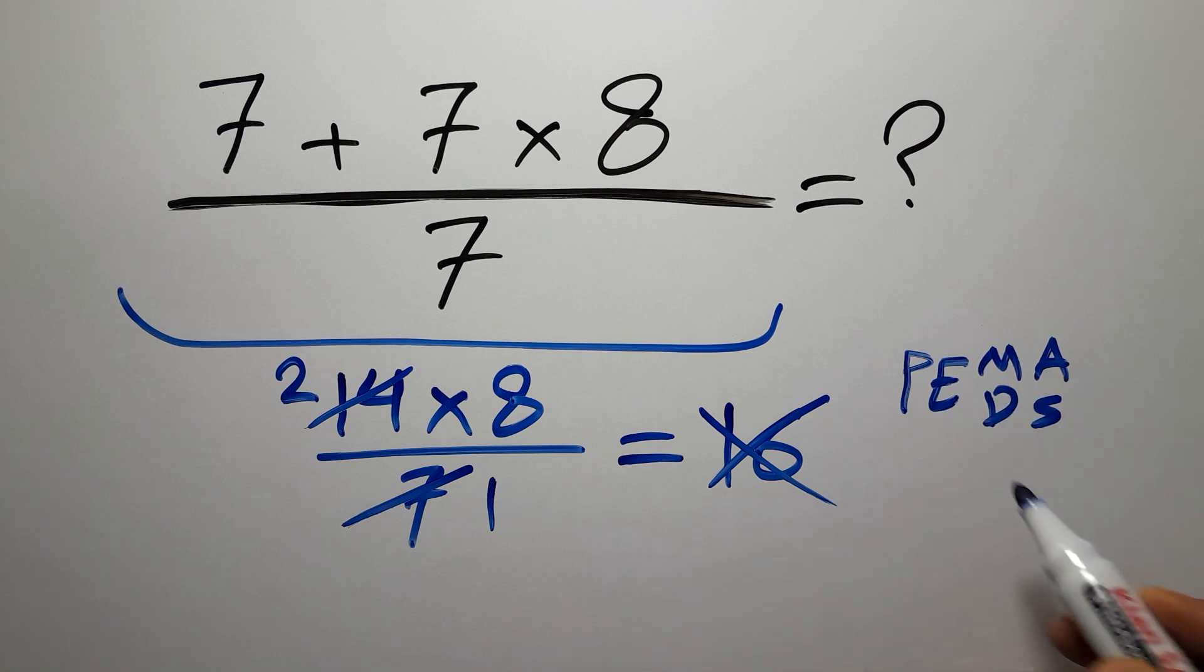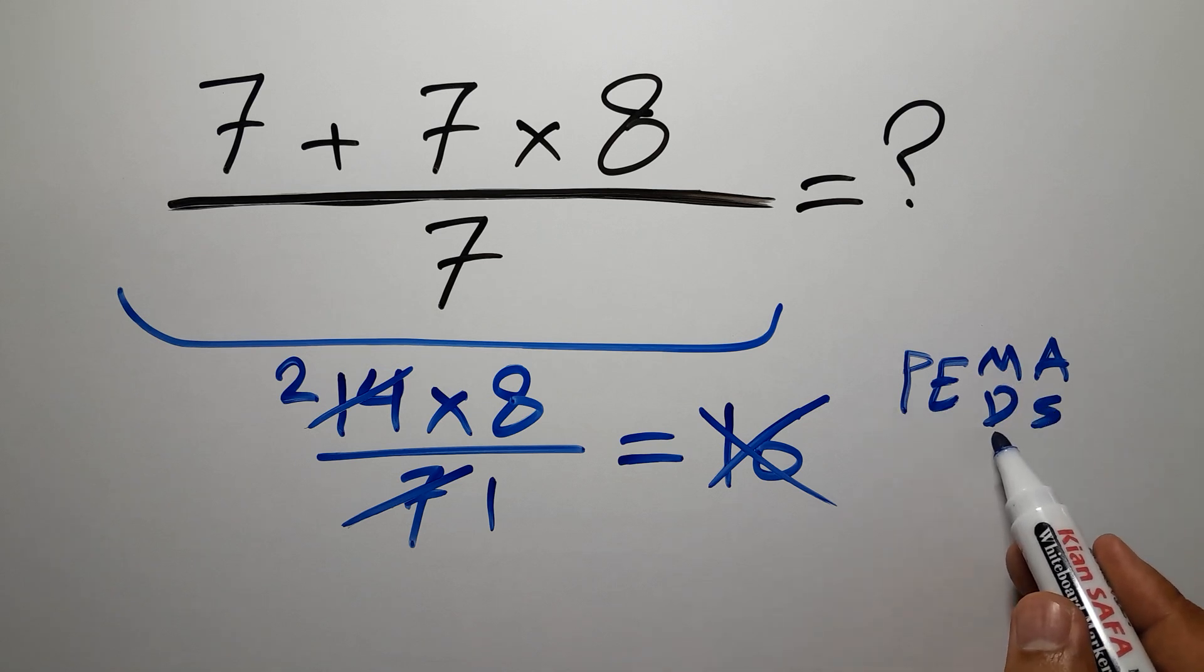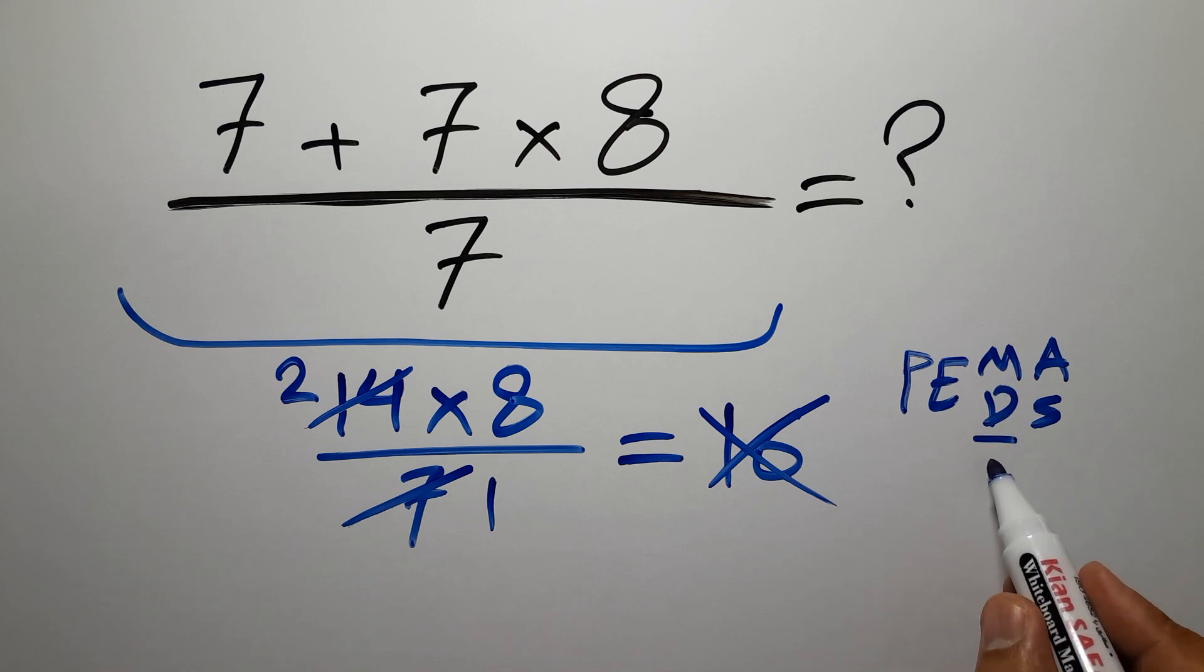First we have to do parentheses, then exponents, then multiplication or division, and finally addition or subtraction. Remember that multiplication and division have equal priority and we have to work from left to right, and the same applies to addition and subtraction.